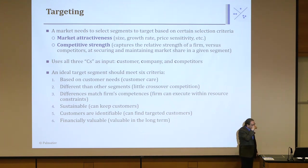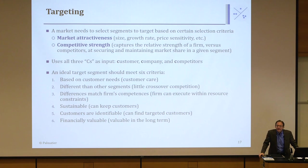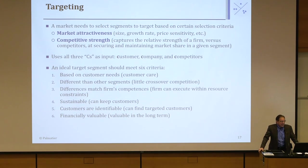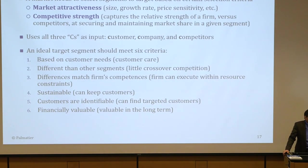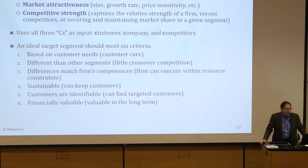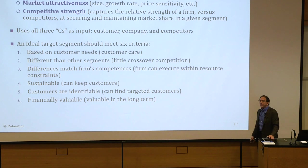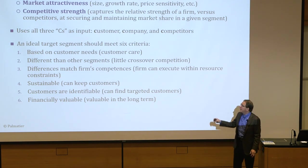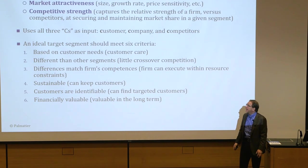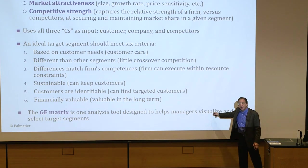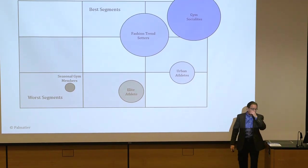An ideal target segment should meet six criteria: customers have to care about whatever you're going after, so it should be based on customer needs; there should be little crossover competition from other segments; you should be able to execute your marketing strategy within your financial constraints; you should be able to retain those customers — it should be a sustainable target segment; you should be able to find those customers — it's got to be identifiable; and it has to be valuable, meaning financially. Typically, we focus on attractiveness and competitive strength. The GE Matrix is a tool for doing that.